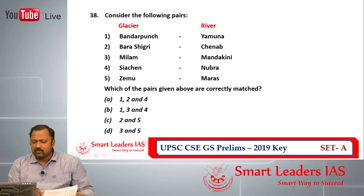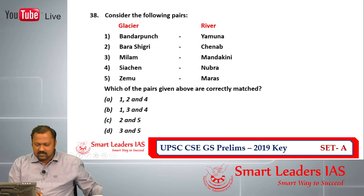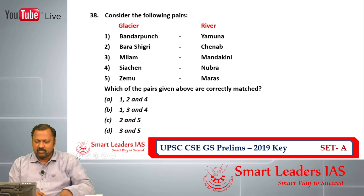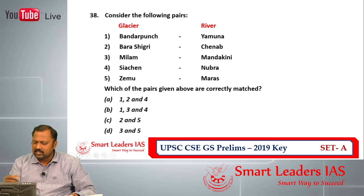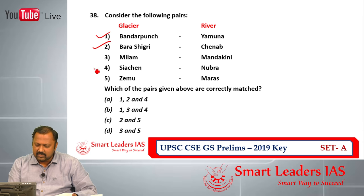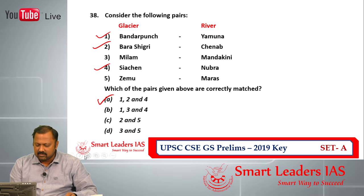Question number 38: consider the following pairs of glaciers and associated rivers. Statement 1 is correct — Bandar Panch glacier is associated with the Yamuna. Statement 2 is also correct — Bara Shigri glacier is associated with the Chenab. Statement 4 is also correct — Siachen glacier is associated with the Nubra River. So 1, 2, and 4 are correct. The answer is A for question number 38.